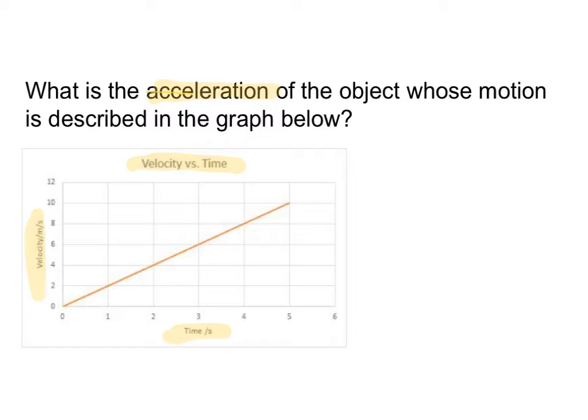That means my y-axis is being measured in meters per second and my x-axis is being measured in seconds. This also tells me that I am going to figure out the acceleration of this object by finding the slope of the graph.